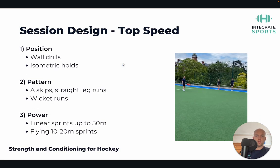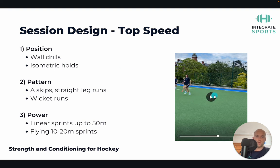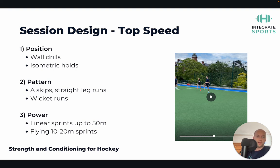For top speed sessions, we have things like A-skips, straight-leg runs and wicket runs for patterning, with similar position work around wall drills and isometric holds. You can see the two athletes here working through some A-skips. Prior to this, you can spend time in isometric positions — hand on the wall, holding that position for five to ten seconds, alternating sides — getting used to the hip-lock position which is so key in sprinting. Then put it into practice with A-skips. For the power aspect, linear sprints up to 50 meters and flying 10 to 20 meter sprints work well.